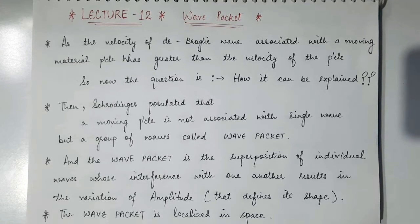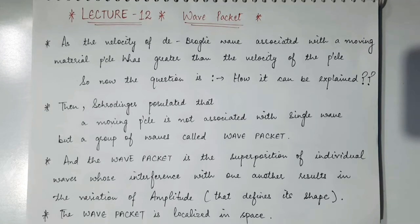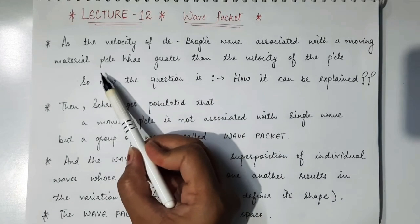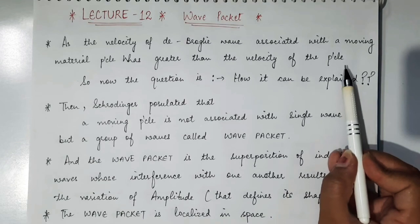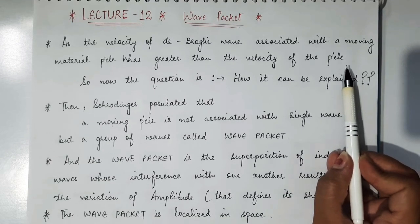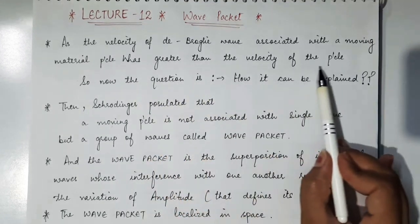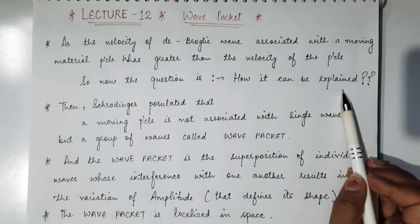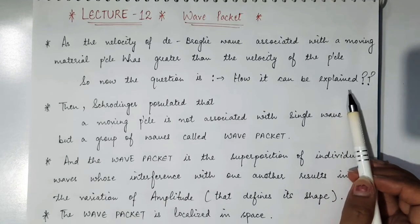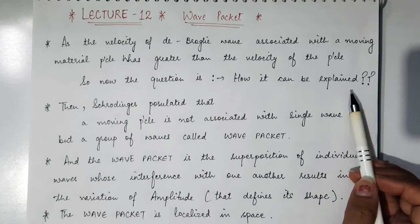In the previous lecture, we derived the expression for the velocity of de Broglie wave, and it was concluded that the velocity of the de Broglie wave associated with a moving material particle was greater than the velocity of light, and so ultimately greater than the velocity of the particle. So the question arises: how can it be explained that the velocity of de Broglie wave is greater than the velocity of the particle with which it is associated?